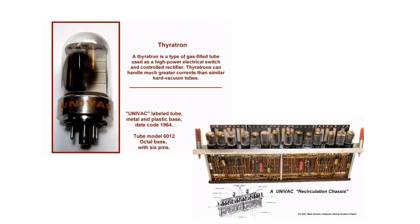One of the common gas-filled tubes, thyratron, was used in Colossus. Thyratron is a type of gas-filled tube used as a high-power electrical switch and controlled rectifier. Thyratrons can handle much greater currents than similar hard vacuum tubes.